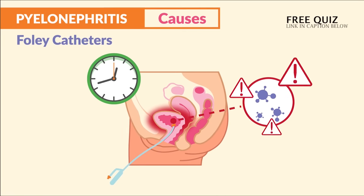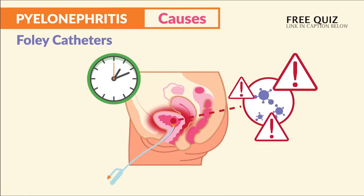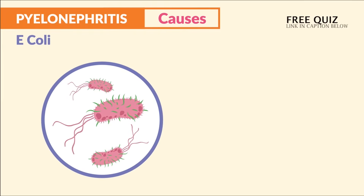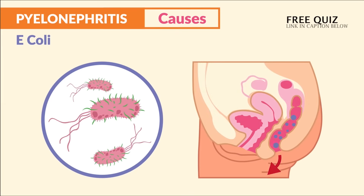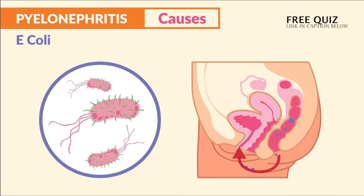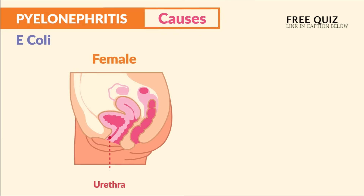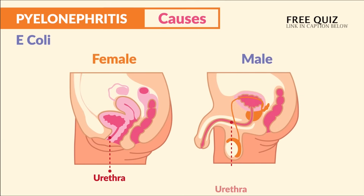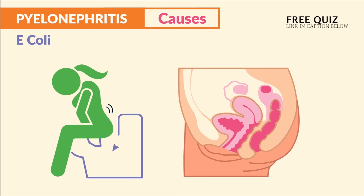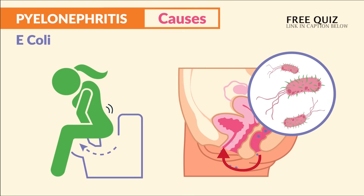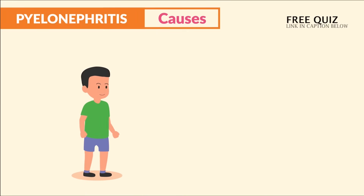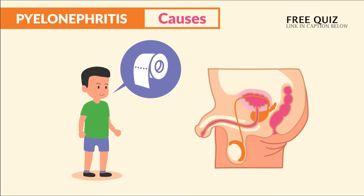Another big cause in the hospital setting is Foley catheters — bacteria can easily climb up the Foley tube and infect the bladder, so the longer the catheter stays in, the higher the risk for infection. Lastly, E. coli is the most common cause: bacteria from the colon gets into the urethra.